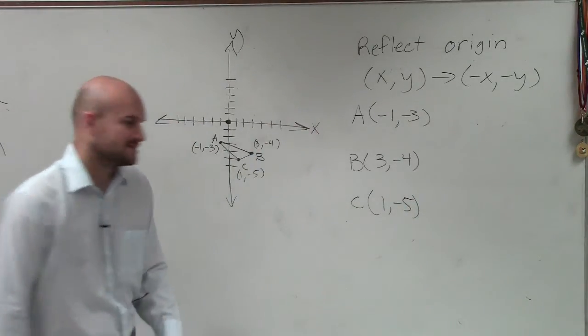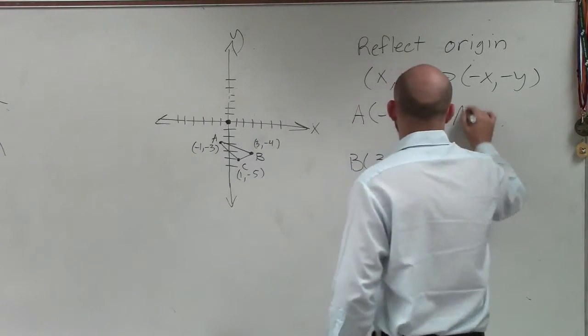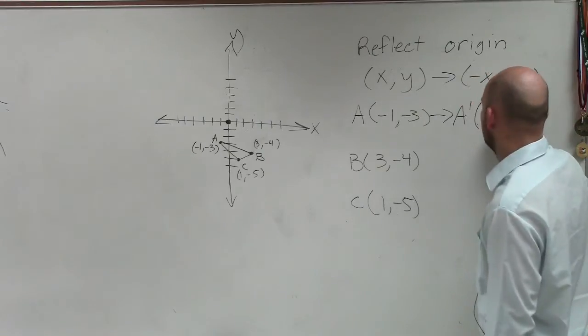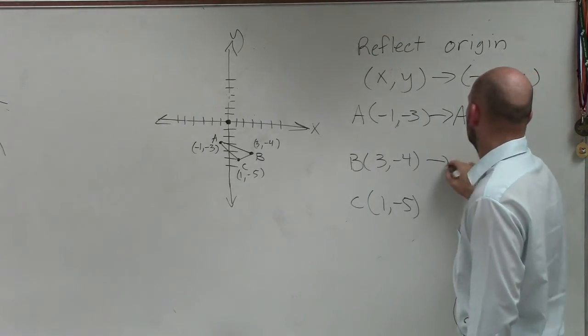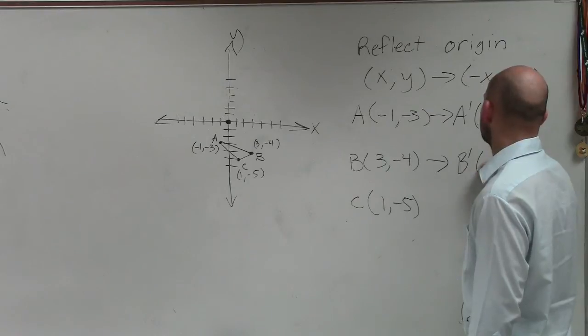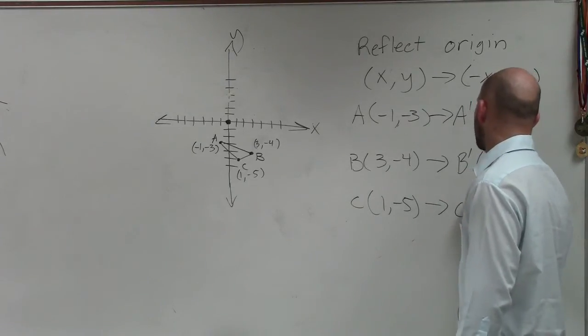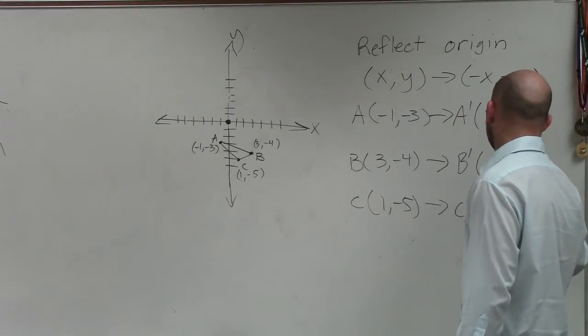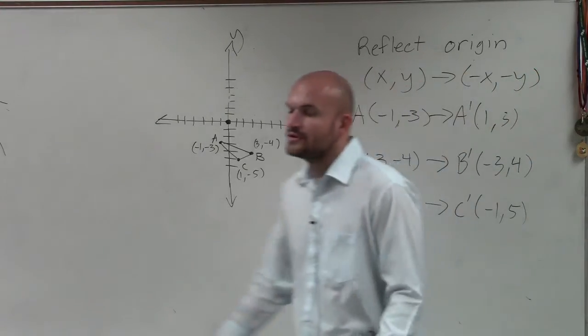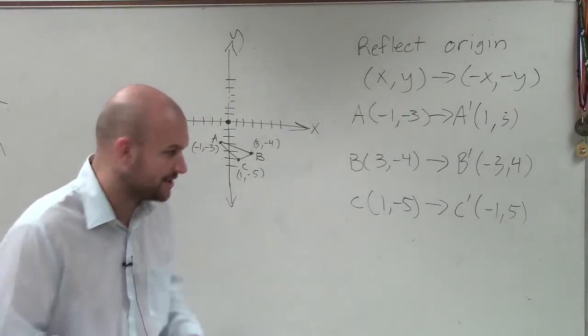So if there's my three points and now I apply my rule, so now I have a prime, which is going to be 1 comma 3. I get b prime, which is now going to be negative 3, 4. And then I have c prime, which is going to equal negative 1, 5. So therefore, now I have my three new points that I'm going to want to write down and graph.